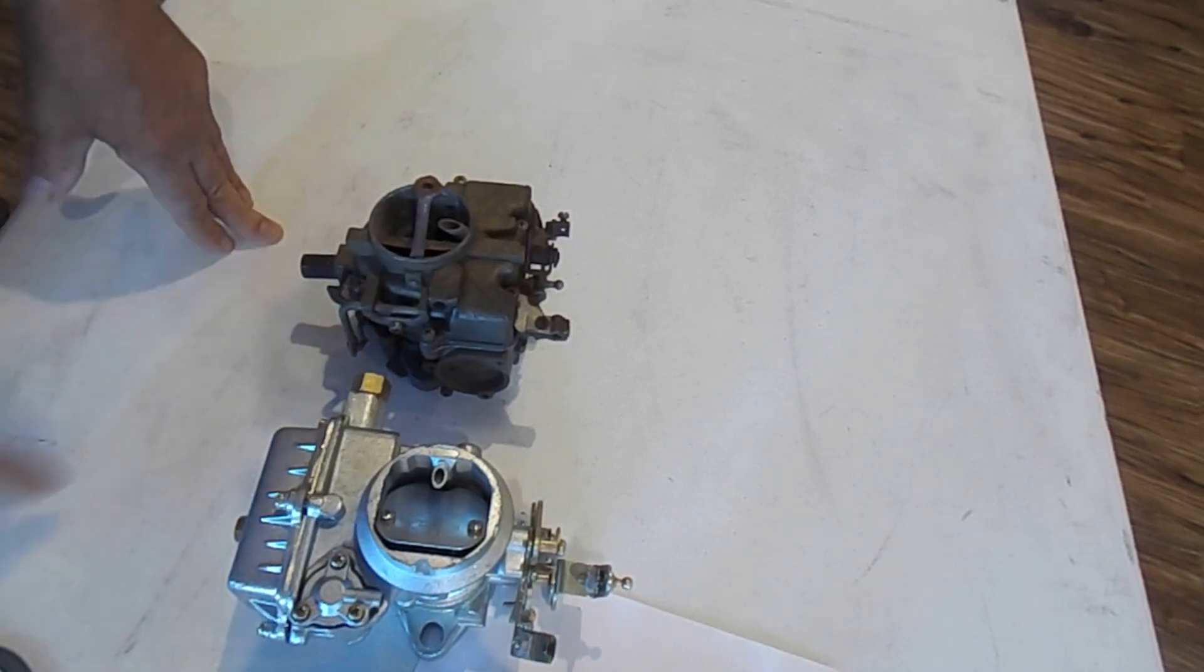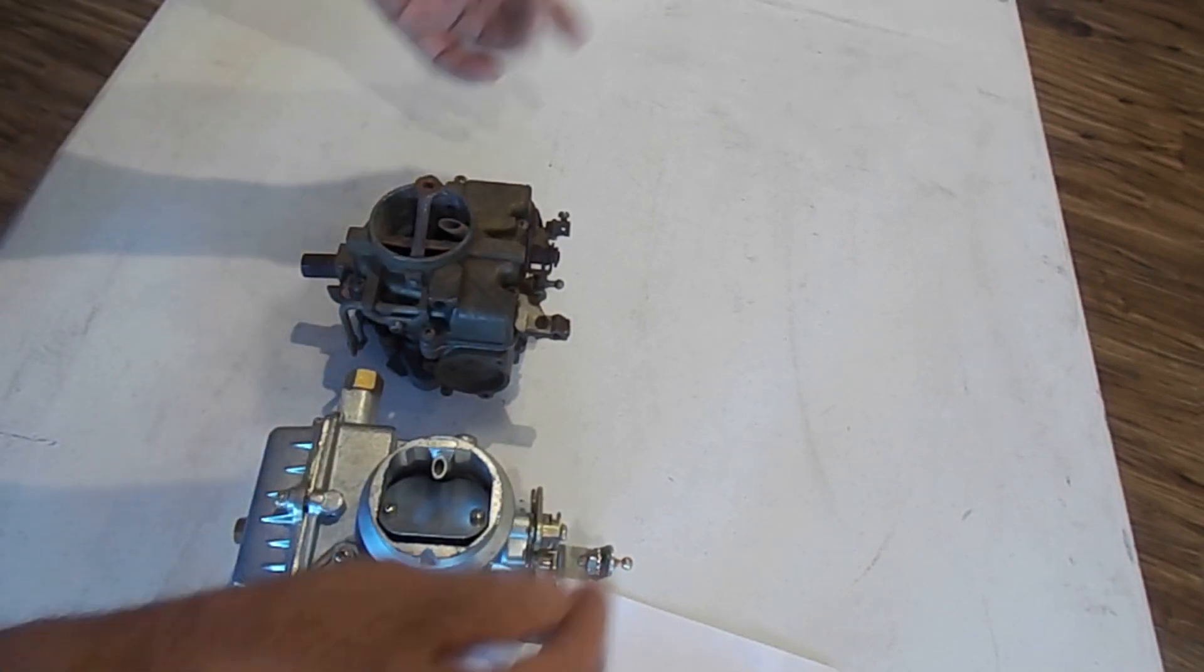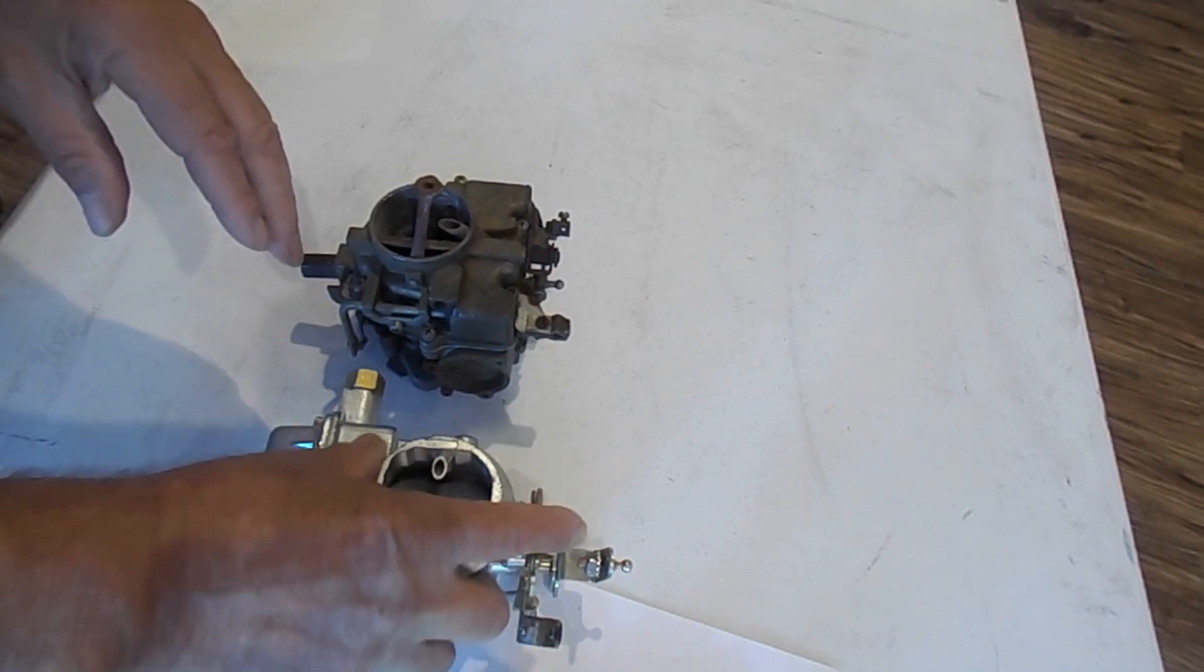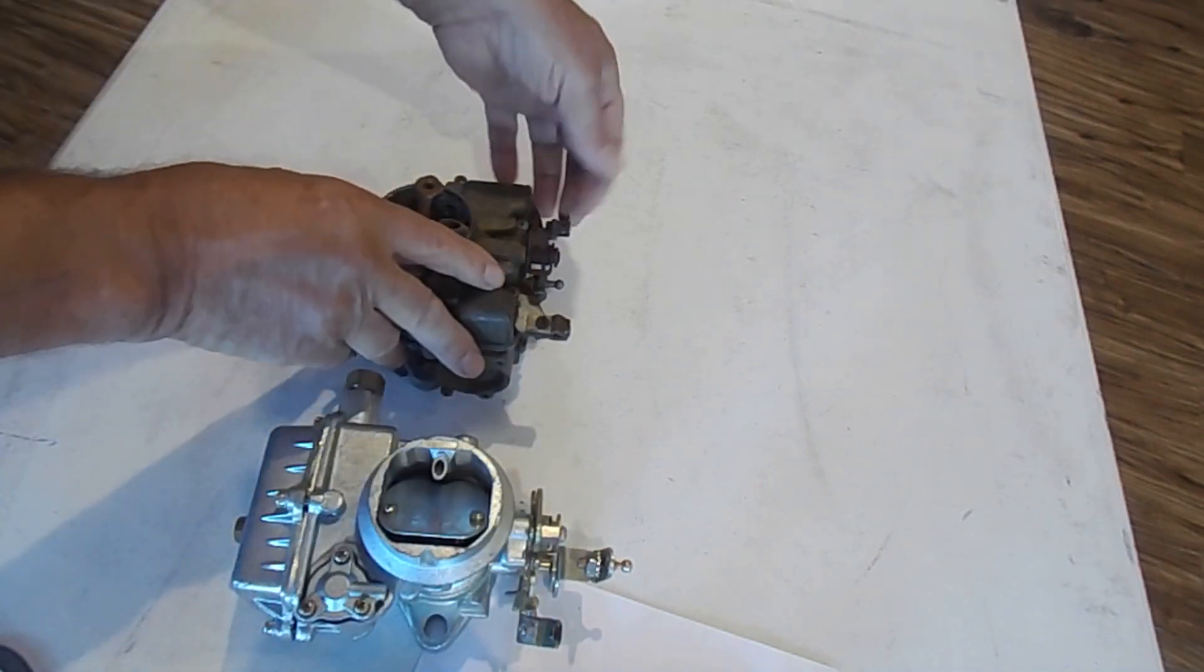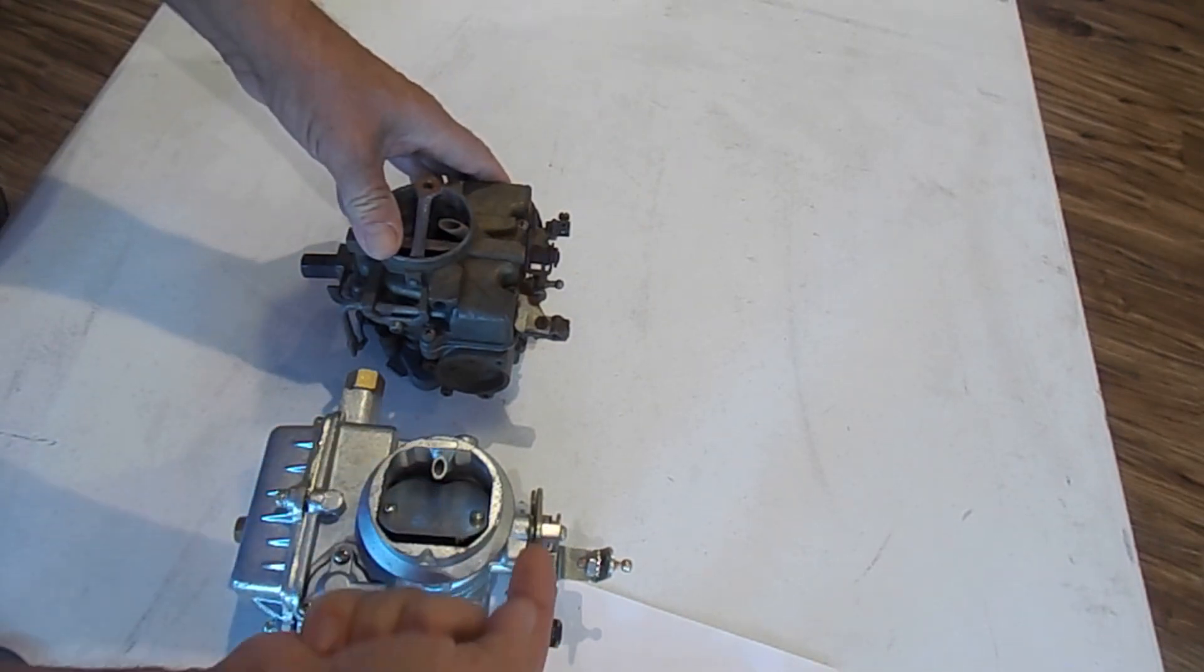So you're going to have to reroute your fuel line to go around here to the side, which typically is not a problem. The manual choke is hooked up right here, and so is the 1940, so that shouldn't be too much of a problem.